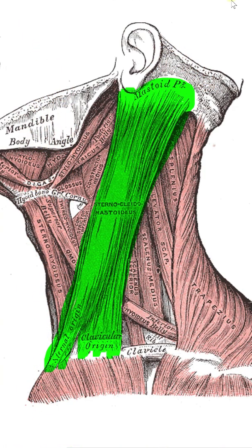Regarding the muscle's name based on a combination of origin and insertion, in the head and neck, we have the sternocleidomastoid. Sterno comes from the sternum, cleido from the clavicle, and mastoid from the mastoid process.